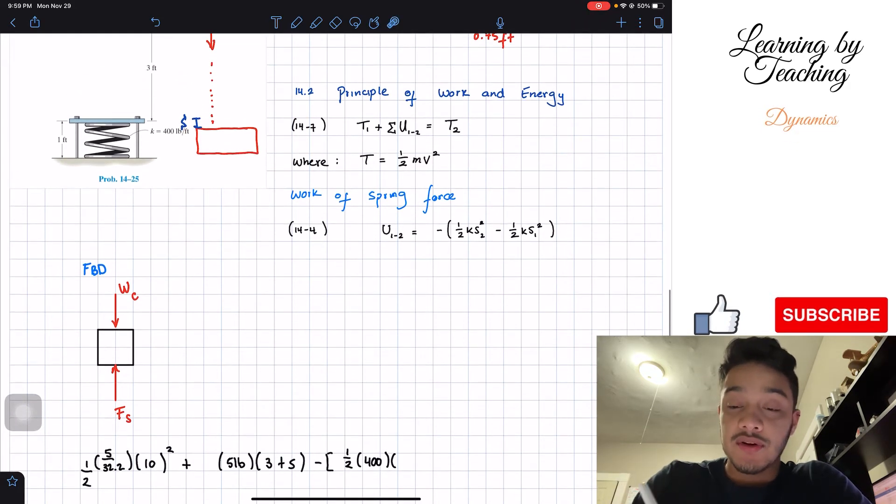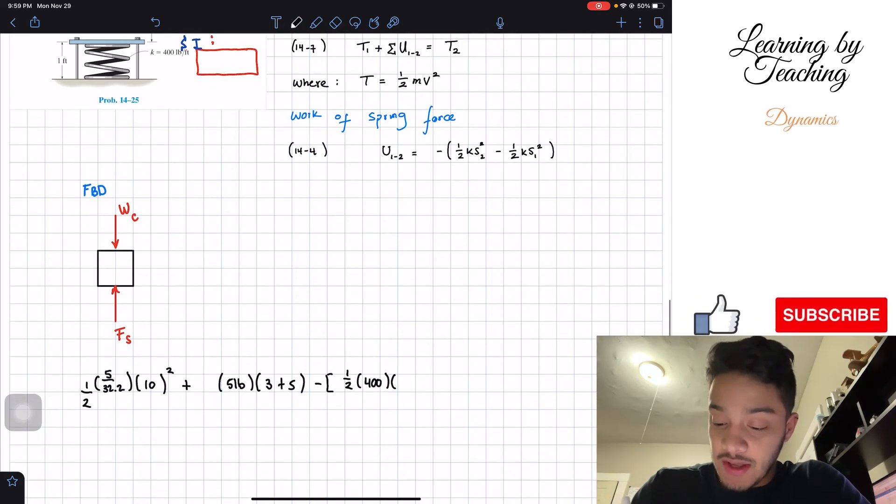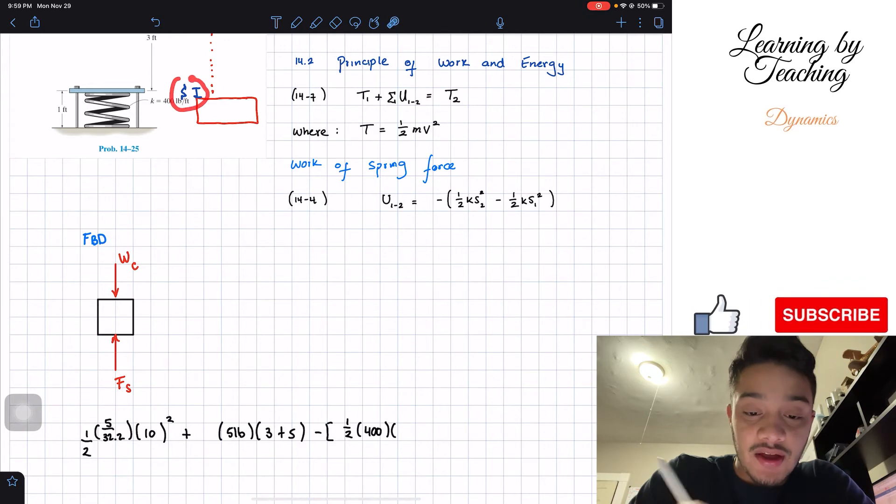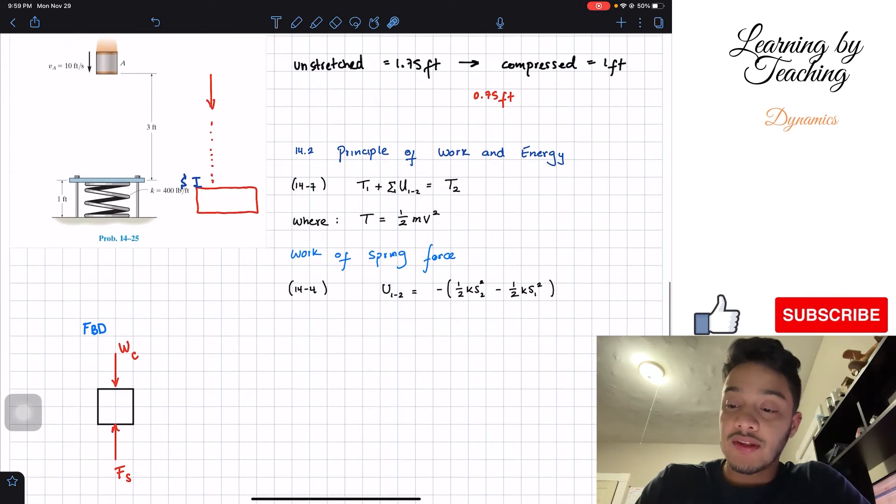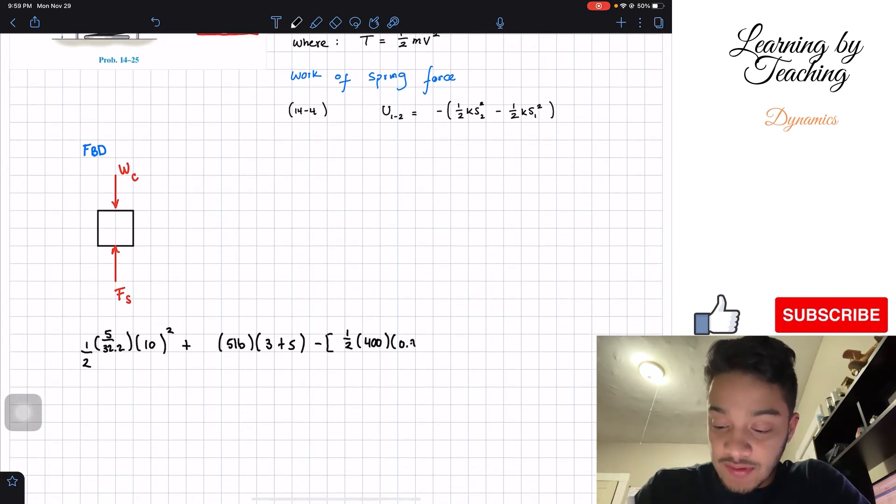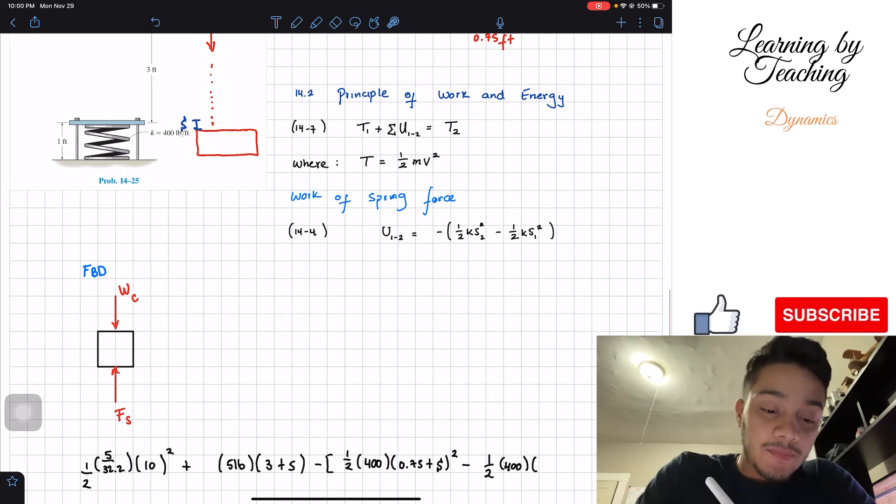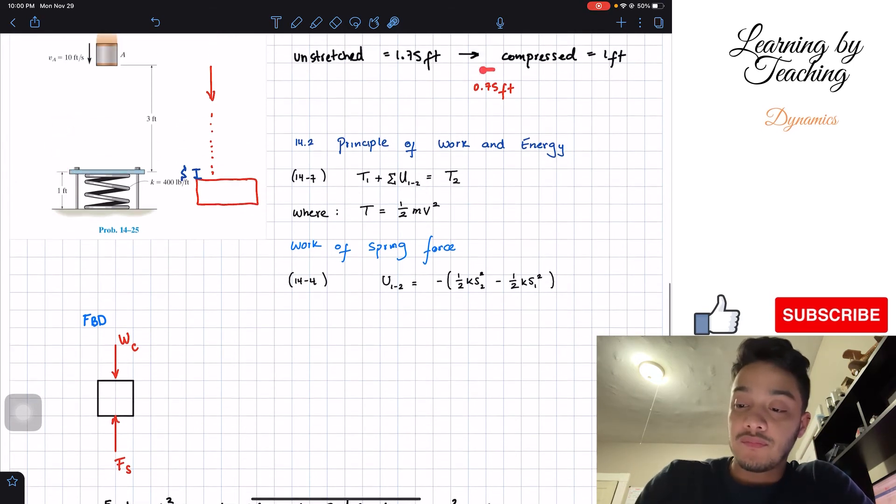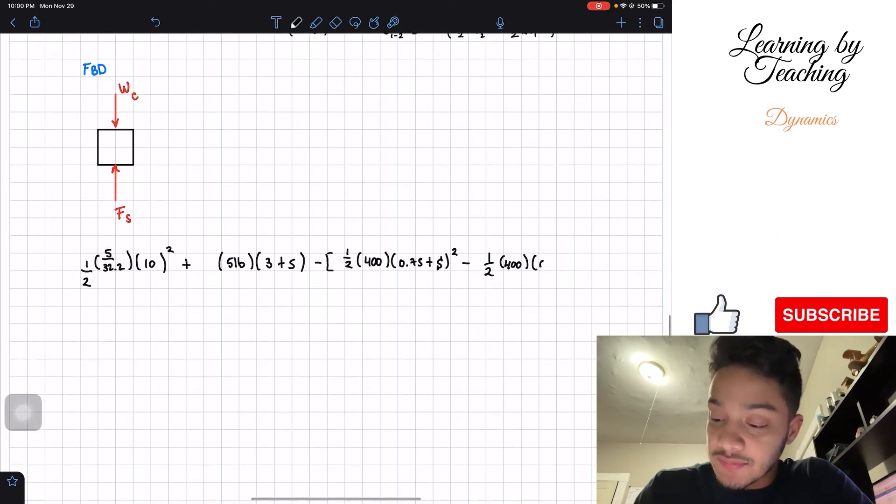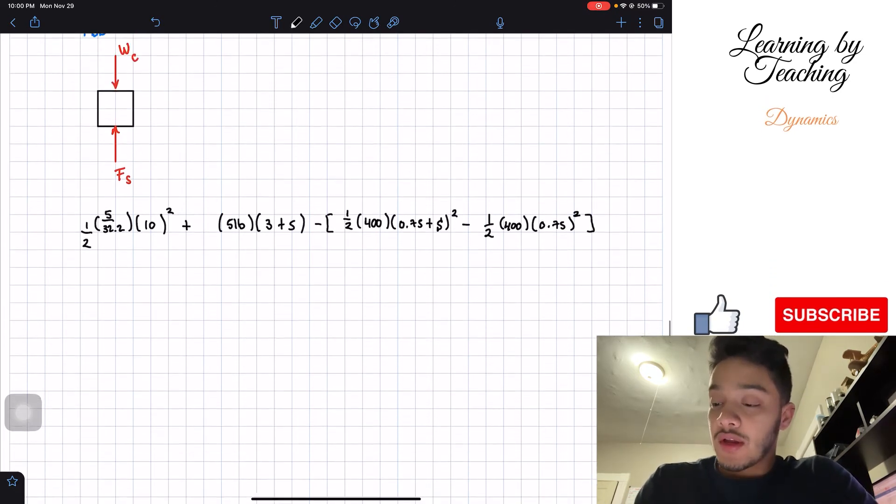This was given in here in the graph, times this second displacement, meaning the displacement that the spring experienced final. The final spring is going to be, well this spring experienced this S, however this spring was also affected by this amount 0.75 before. So we're going to have 0.75 given plus our distance S and this should be squared, minus one half of my spring constant times the initial.